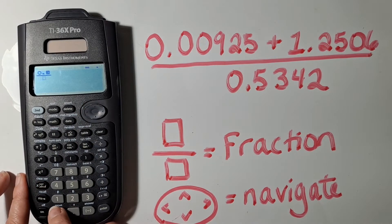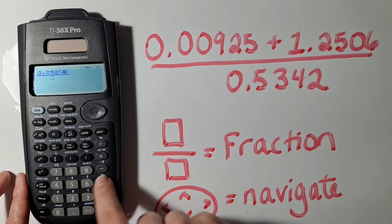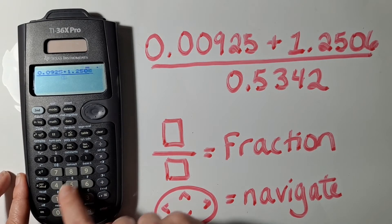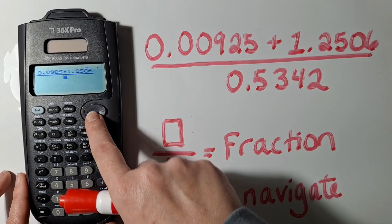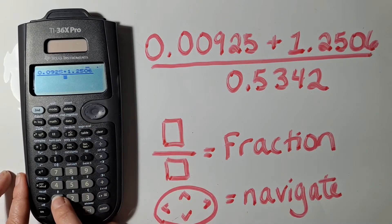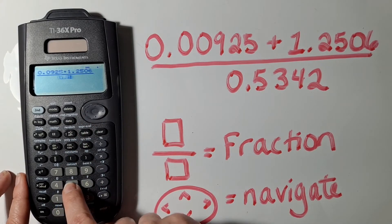You can start by typing in the numerator, 2506. Then you can use that down arrow to go down into the denominator, 0.52.